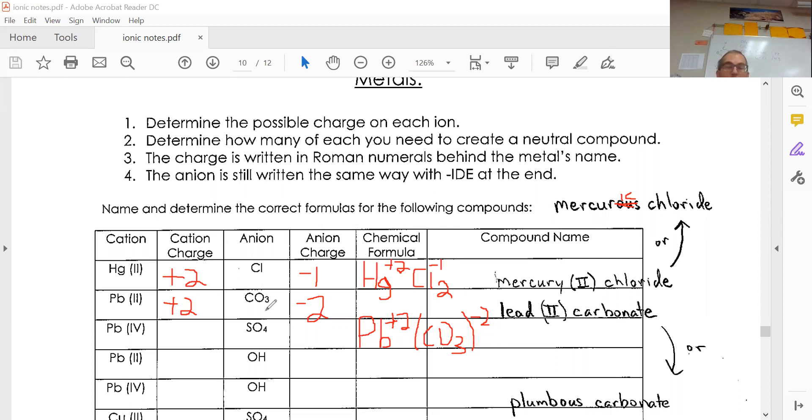This would be PbCO3. How would we name it? We'd say Pb is lead and it has a charge of two. You want to specify because sometimes lead can be plus four. The last name was carbonate which we pulled from the common ion chart. If you look at the common ion chart you'll see it could be plumbous carbonate, and that is just the latin. That's where they get the Pb from.